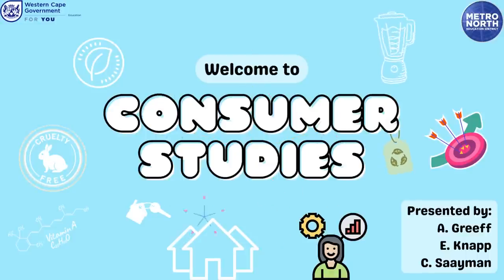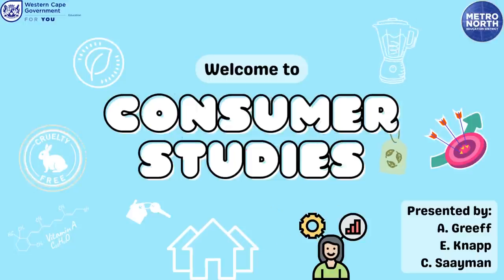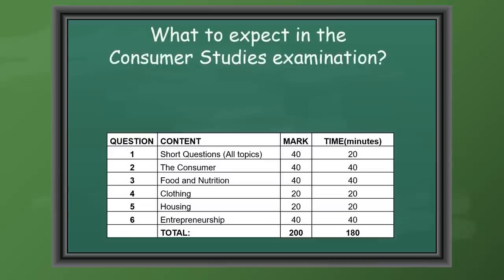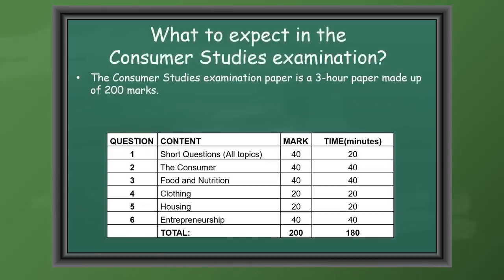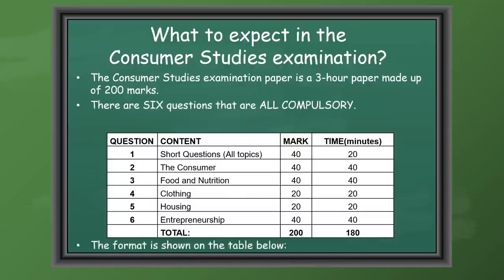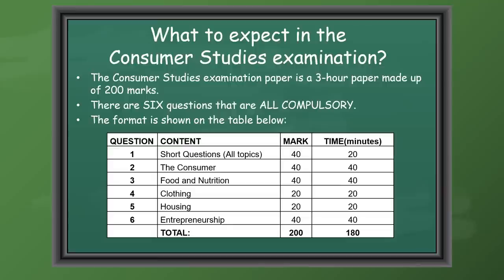Good day learners of the Western Cape. On the 1st of December you will be writing your Grade 12 NSE exams and today we will look at what to expect in the Consumer Studies exam paper. The paper is a three-hour paper that is made up of 200 marks. There are six questions that are all compulsory. The format is shown on the table below and it's very important to look at the time allocation.